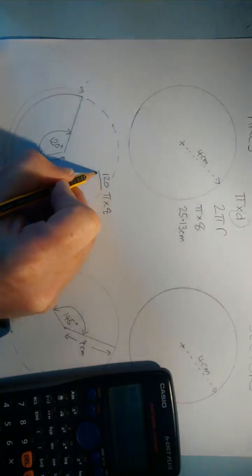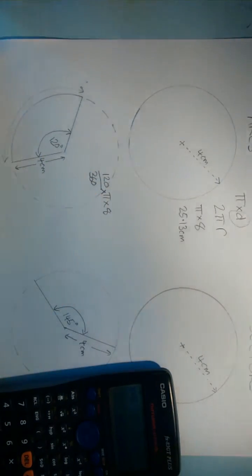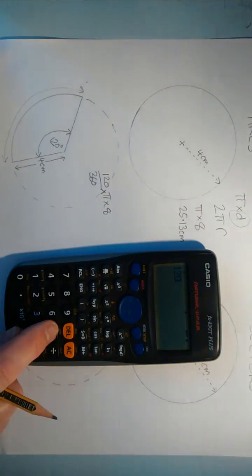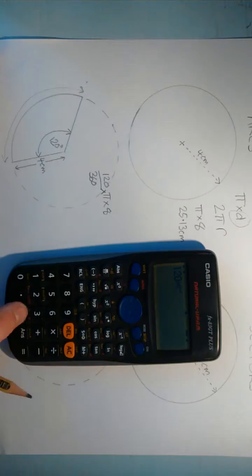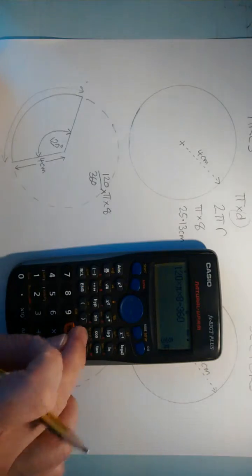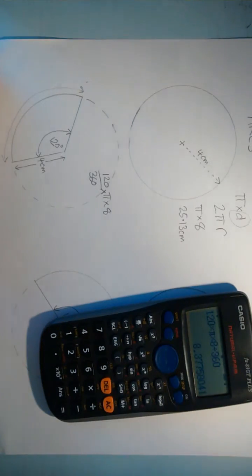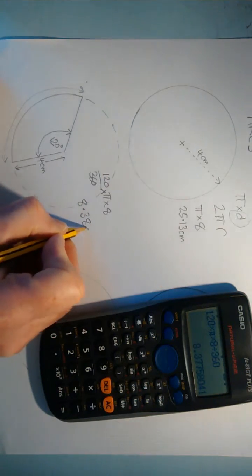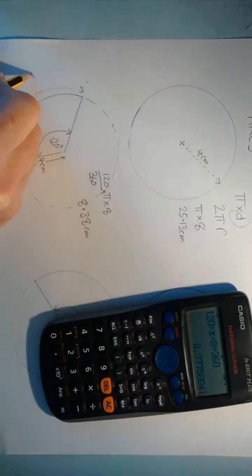So 120 times pi times 8 divided by 360 gives us 8.38 cm. So the length of this arc is 8.38 cm.